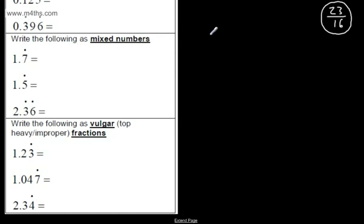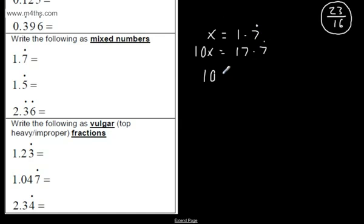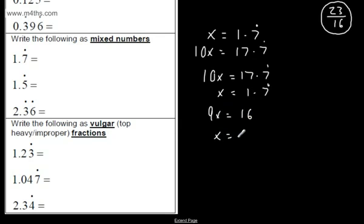So let's start writing 1.7 recurring as a top-heavy fraction. We'll let x be equal to 1.7 recurring. So 10x is going to be equal to 17.7 recurring. I've now got a match with my 0.7 recurring. So we write 10x equal to 17.7 recurring, and x equal to 1.7 recurring. Subtracting down, 9x is equal to 17 minus 1, which is 16. So x is going to be equal to 16 over 9, which is a top-heavy fraction.